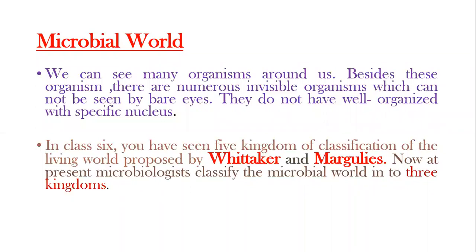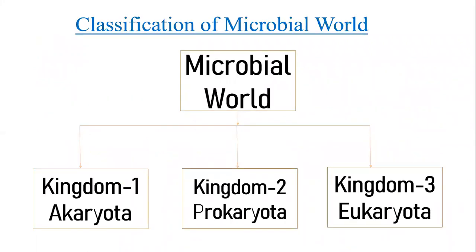We can see many organisms around us. Besides these organisms, there are numerous invisible organisms — organisms which cannot be seen by the naked eye. They don't have well-organized nuclei with specific nuclear characters. In your classes you have seen the five kingdoms of classification of the living world proposed by Whittaker and Margulis. Now, microbiologists classify the microbial world into three kingdoms. You can see the diagram of the microbial world in the slide.